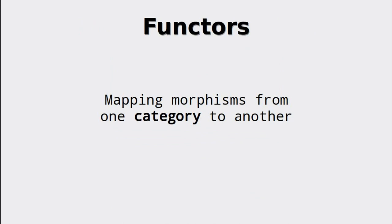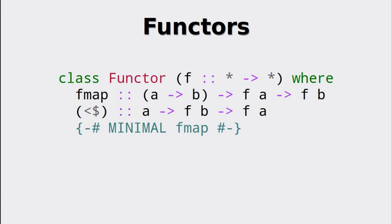As we have seen before, the types of Haskell are a category by itself. Could this functor be used in order to map types? Let's look at the definition of functors. The important function we want to take a look at is fmap. Looking at the type signature, we see that fmap takes a function going from A to B and an additional value in the functorial context, then applies the function to the value inside the functorial context to get the end result.